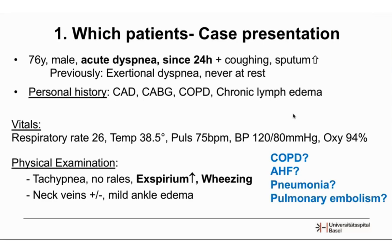Because of his history of COPD and the auscultation finding of prolonged expiration and wheezing, COPD exacerbation was a strong differential diagnosis. On the other hand, his known coronary artery disease and prior CABG raised the possibility of acute heart failure. Fever and dyspnea also suggested pneumonia, and the acute onset of dyspnea made pulmonary embolism a consideration, though less likely given the full picture.